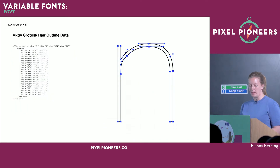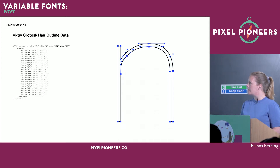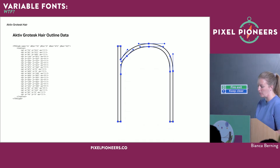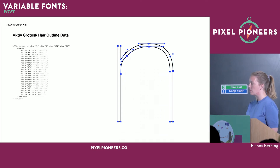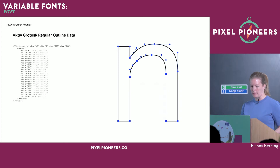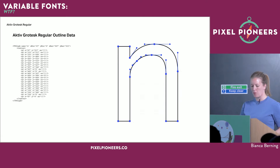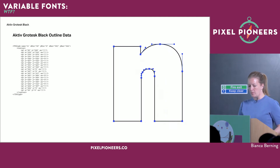Inside the actual font files you find data representing letter outlines. On the left you can see the code that represents the outline of a lowercase 'n' in the hairline weight — lots of coordinates and information about how they connect, defining the shape. If I look at the outline data for the regular and black weights, they're very similar but with coordinates sitting at different places.